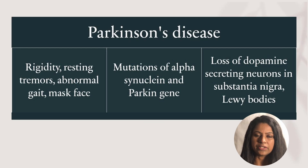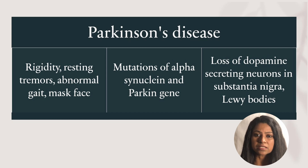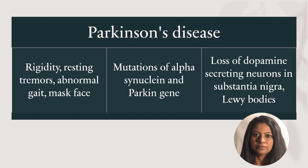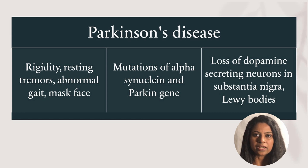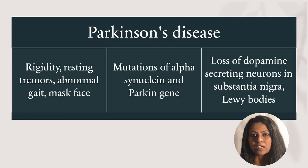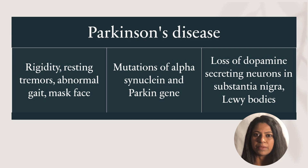Parkinson's disease presents with rigidity, resting tremors (also called pill-rolling tremors), abnormal gait such as festinating gait and shuffling gait, mask face, autonomic disturbances, and dementia. Mutations in alpha-synuclein — a synaptic protein encoded by the SNCA gene on chromosome 4 — and mutations in the parkin gene are seen in Parkinson's disease. Exposure to toxins like arsenic, MPTP, and phenothiazines increases risk. Patients with Gaucher's disease and Wilson's disease also have a higher risk of developing Parkinson's disease.